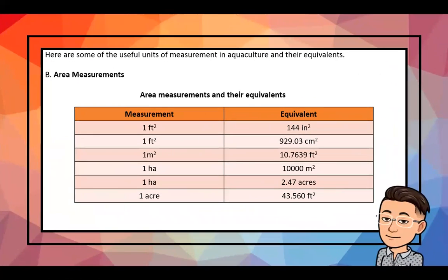For area measurements and their equivalents: 1 square foot = 144 square inches; 1 square foot = 929.03 square centimeters; 1 square meter = 10.7639 square feet; 1 hectare = 10,000 square meters; 1 hectare = 2.47 acres; and 1 acre = 43,560 square meters.